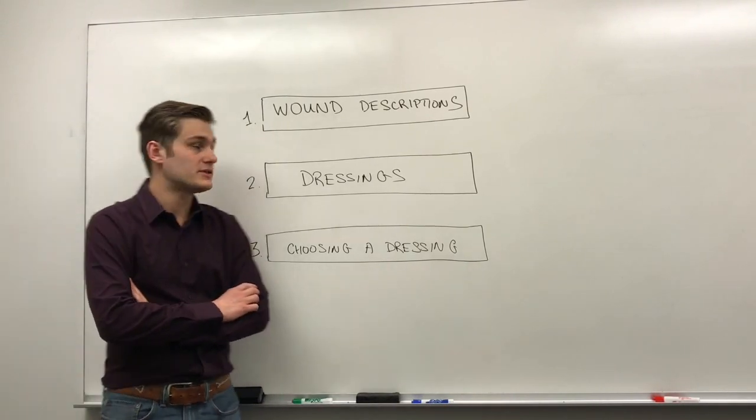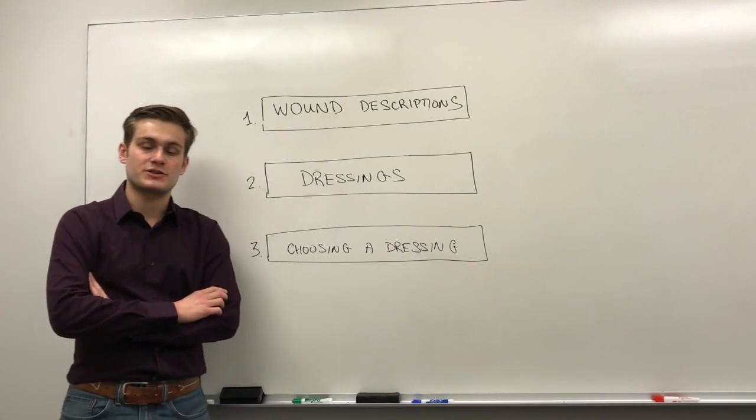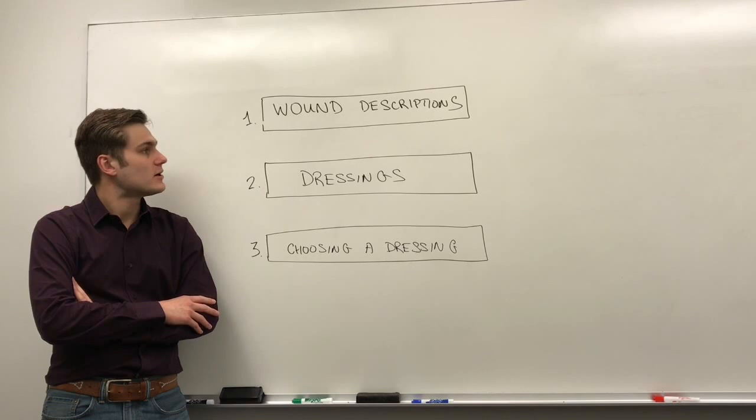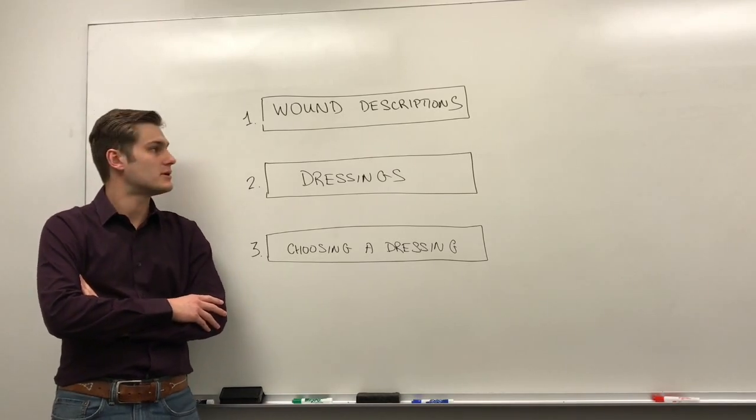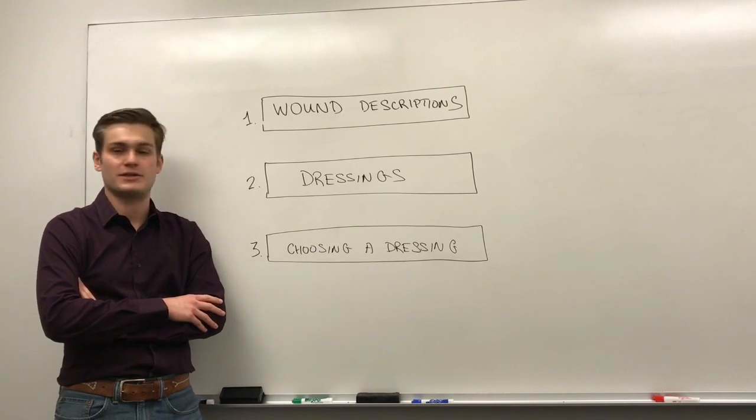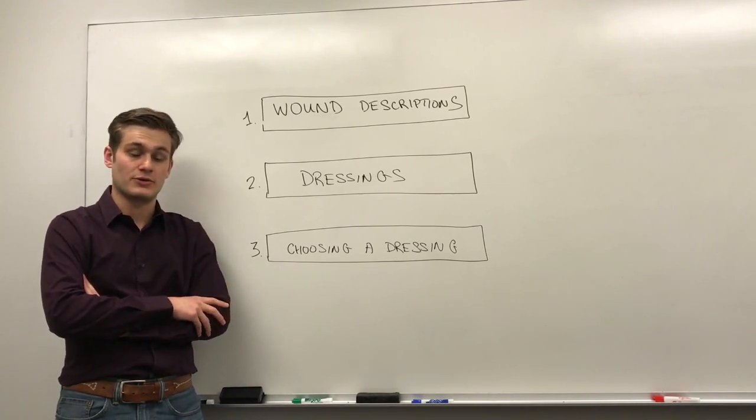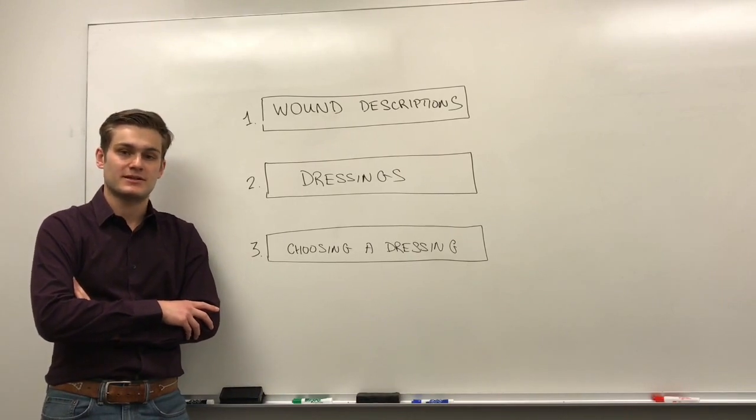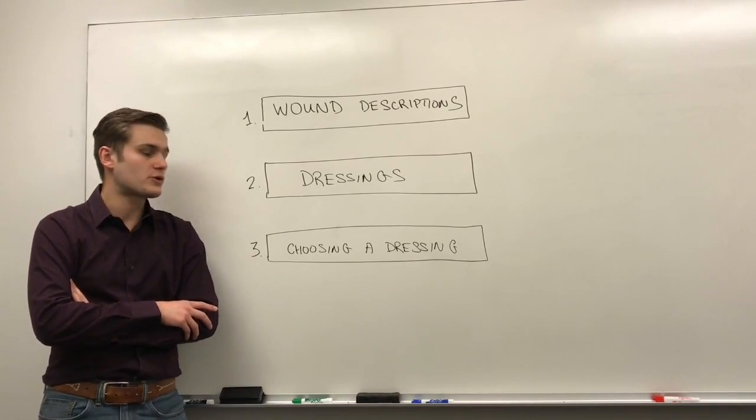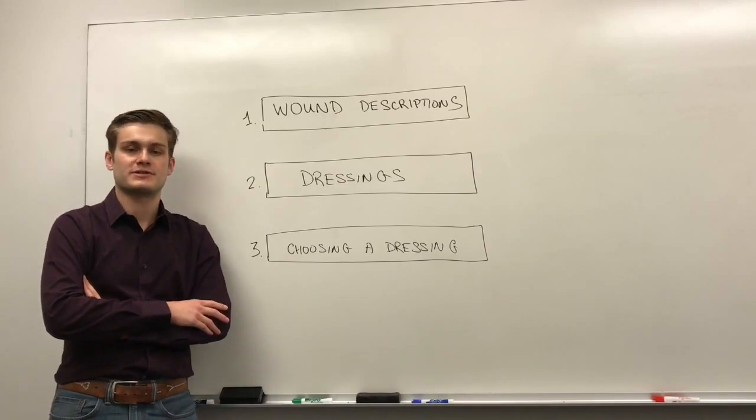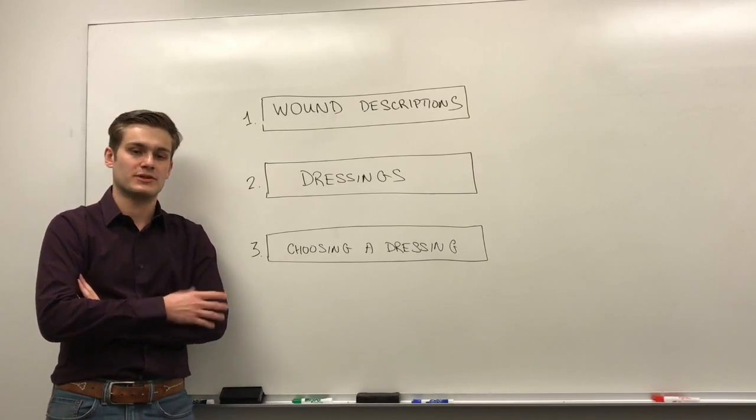So in this short series, we're going to touch upon three topics. We're first going to talk about different wounds and how they can be described in an organized way. We're going to talk about different types of dressings that exist. And then we're going to put it all together and talk about how to choose a correct dressing based on the type of wound that you have.